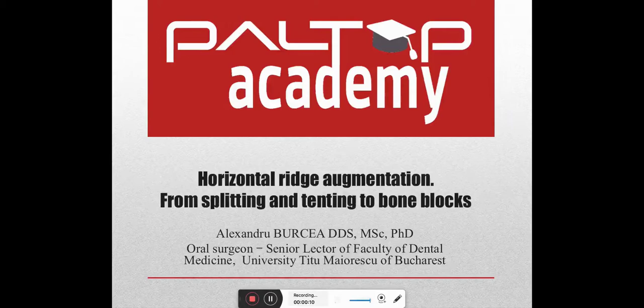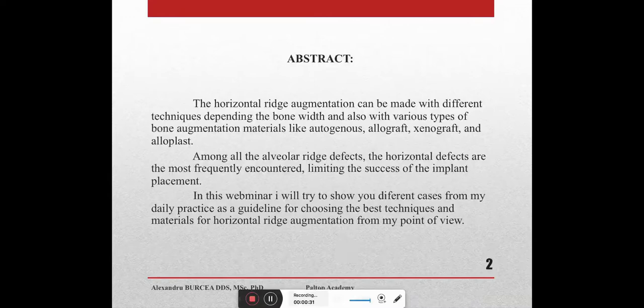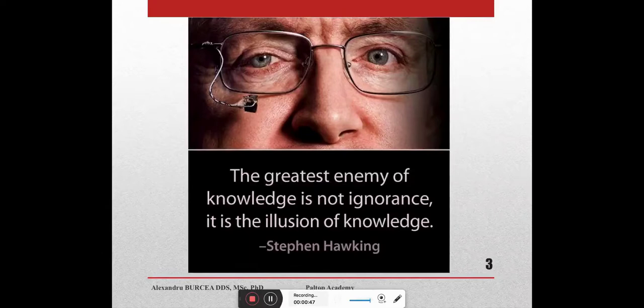Today we will talk about horizontal ridge augmentation from splitting and tenting to bone blocks. The horizontal ridge augmentation can be made with different techniques depending on the bone width, and also with various types of bone augmentation materials like autogenous, allograft, xenograft, and alloplast. Among all the alveolar ridge defects, the horizontal defects are the most frequently encountered, limiting the success of implant placement.